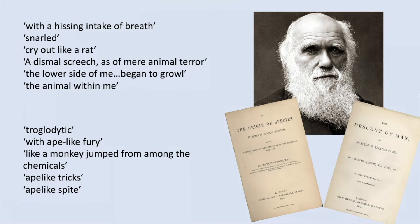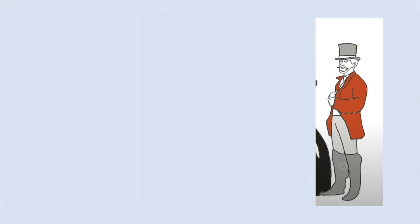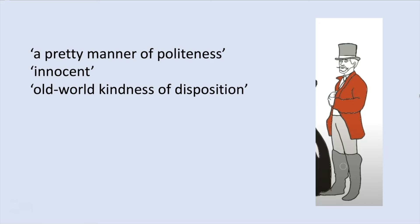There are only two crimes committed by Hyde reported in detail in the novella. The most horrific is the murder of Danvers Carew. Stevenson uses this murder to tap into Victorian society's fears related to the lower classes. According to the witness, Carew bows and approaches Hyde with a pretty manner of politeness, his face described as innocent and having an old-world kindness of disposition. Hyde, however, carried on like a madman, attacking Carew with ape-like fury and showing insensate cruelty. Carew represents the upper class of Victorian London, and that old-world kindness refers to established values among the Victorian middle and upper classes.